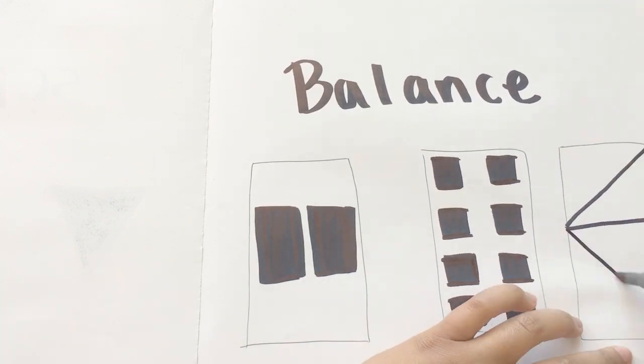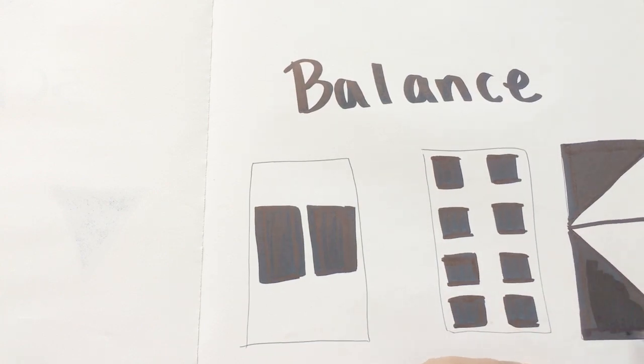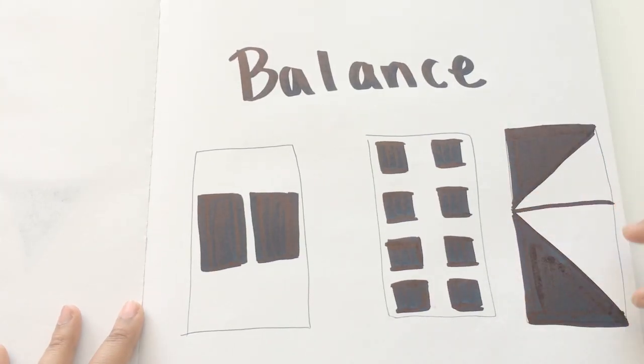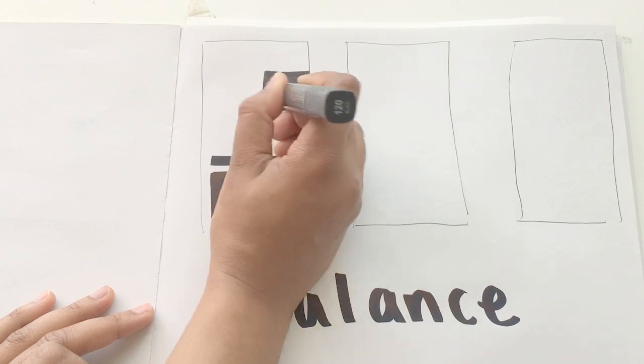The third example uses angles to create balance. Angles are used to create a balance in the weight and shift the eyes of the viewer. Here are a few mistakes to avoid.